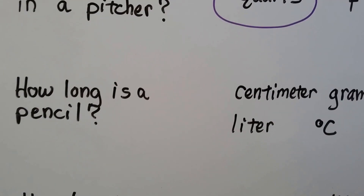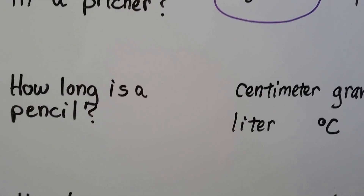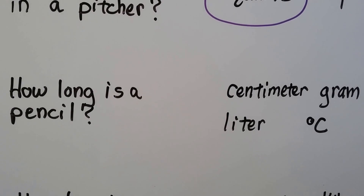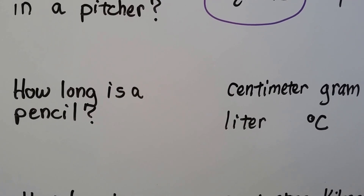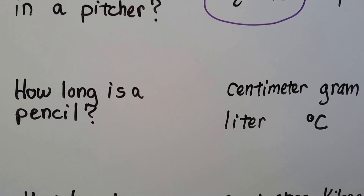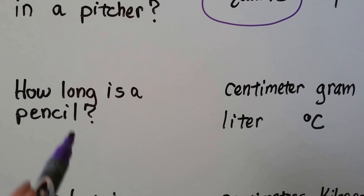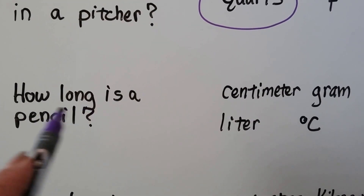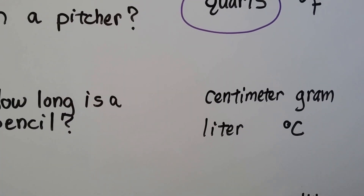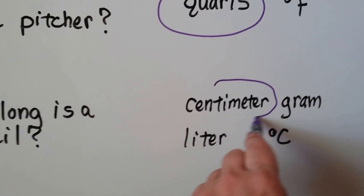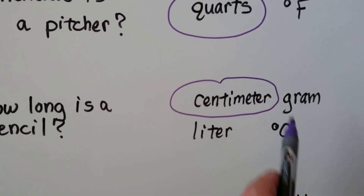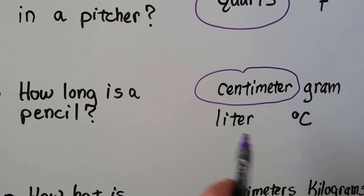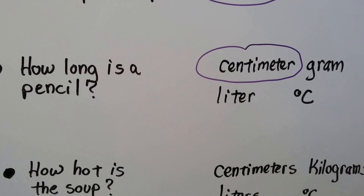What if we wanted to know how long a pencil is? Would we use centimeters, grams, liters, or degrees Celsius? It says how long, so we need a unit of measure that tells us length. If you said centimeters, you're right. The gram would tell us how much it weighs, the liter would tell us liquid volume, and degrees Celsius would tell us hot or cold.